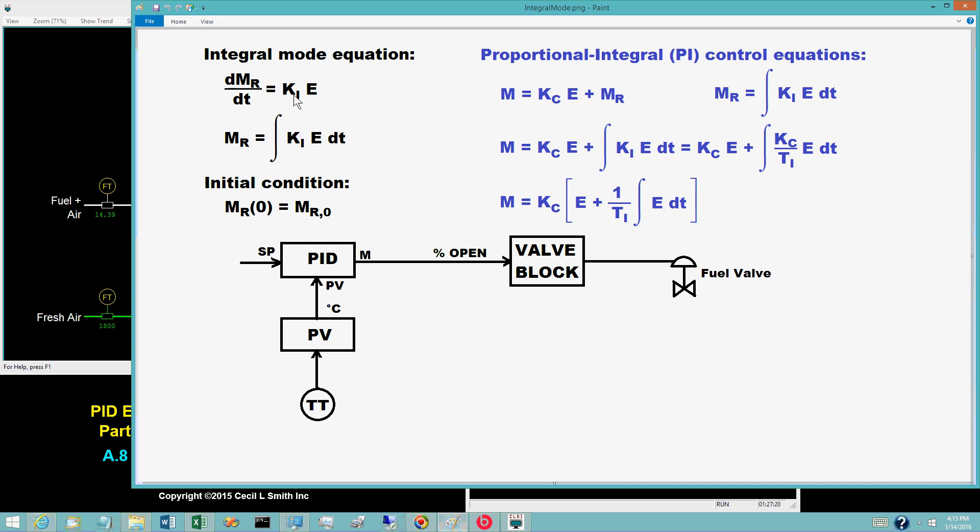The coefficient K sub I is a tuning coefficient known as the integral, or reset, gain.